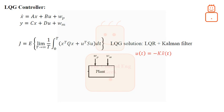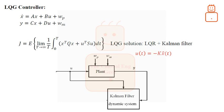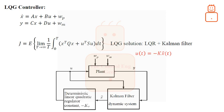We have the process subjected to process and measurement noises. When a control action is applied to the process, a corresponding output is produced. When both the applied control action as well as the produced output are fed into the Kalman filter, the filter determines an estimate of the process state. This state is then utilized by the LQR controller to produce the required control action.